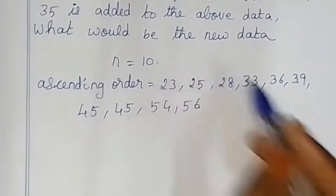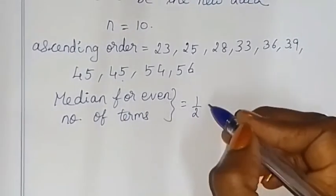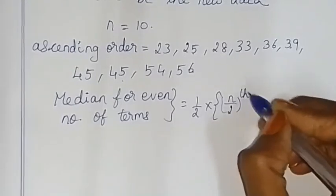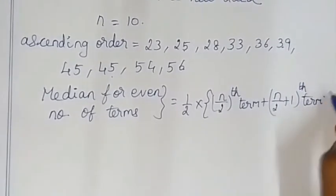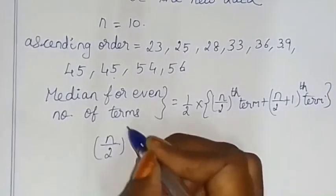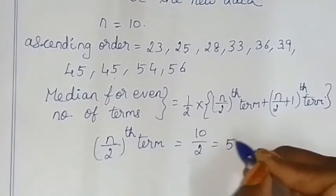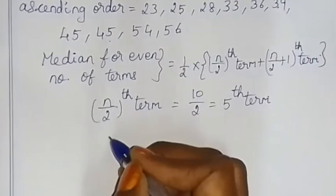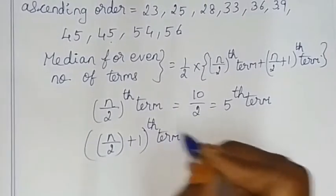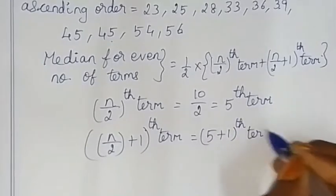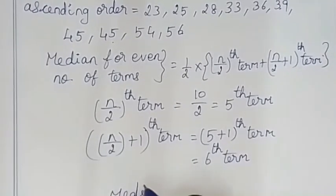For even number of terms, we add the two middle terms and divide. Median for even number of terms = (1/2) × (n/2 th term + (n/2 + 1) th term). With n = 10: n/2 = 5th term. And the (n/2 + 1) th term = 6th term.